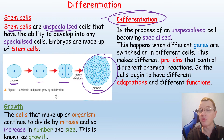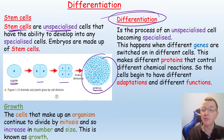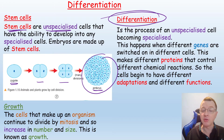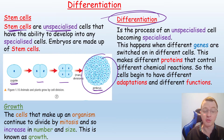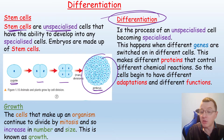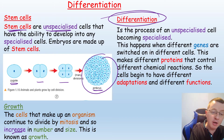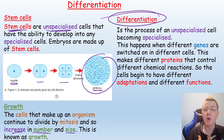Differentiation is the process of an unspecialised cell becoming specialised. This happens when different genes are switched on in different cells, meaning different proteins are made, and the different proteins control different chemical reactions. So the cells begin to have different adaptations and different functions. These specialised cells will continue to divide by mitosis, increasing in number and in size — and this is known as growth.